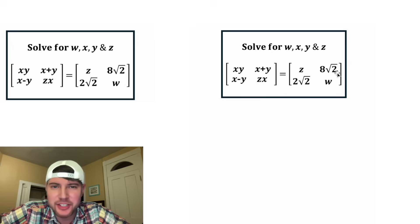Now we're given a 2x2 matrix set equal to another 2x2 matrix. For this matrix, the elements are xy, x plus y, x minus y, and zx. And for this matrix, the elements are z, 8 root 2, 2 root 2, and w.